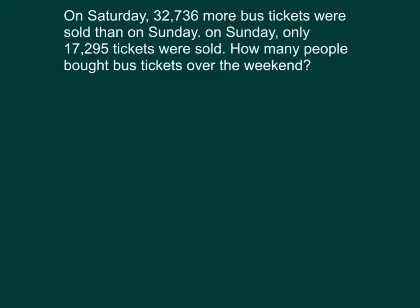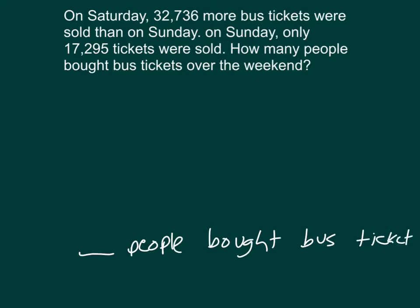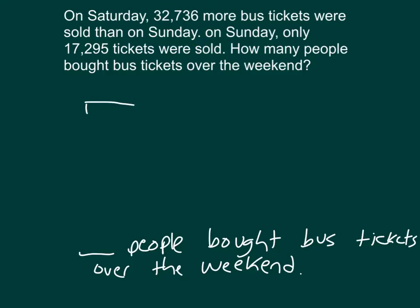Let's write out a focused answer first: blank — people bought bus tickets over the weekend, the weekend being Saturday and Sunday. We also want to draw, so we're using an R-D-W approach — read, draw, and write. Let's draw a tape diagram. We know the number sold on Sunday, so we can model that number first as our Sunday bar and label it as 17,295.